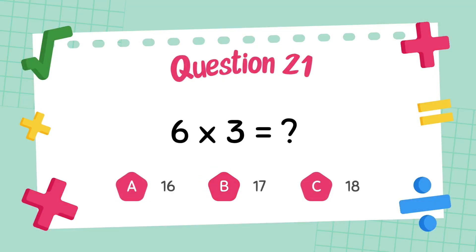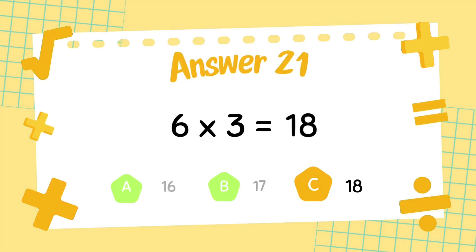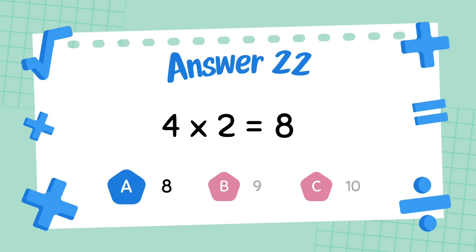What is 6 multiply 3? The answer is 18. What is 4 multiply 2? The answer is 8.